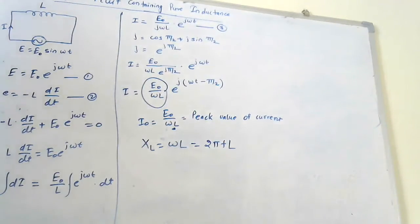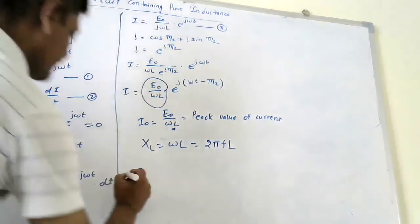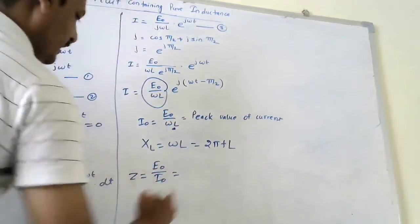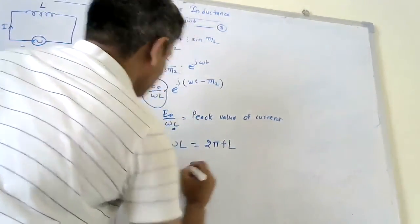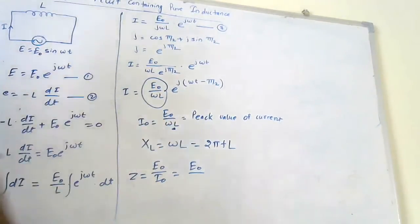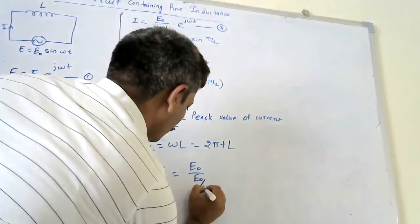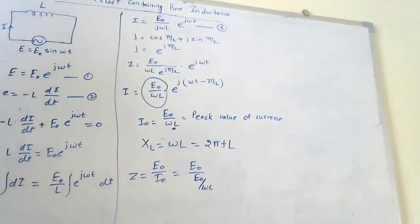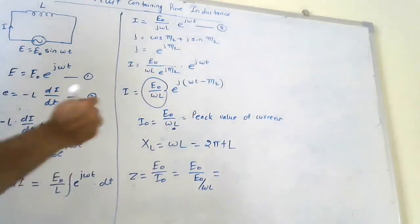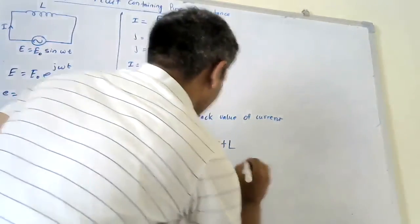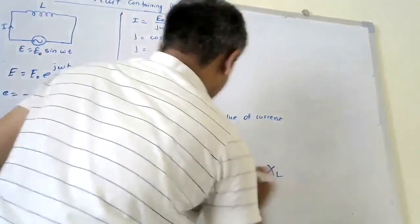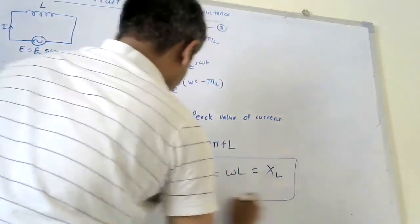Now after that, we have to find out the impedance. Impedance is denoted by Z, where Z equals E0 upon I0. Since I0 is nothing but E0 upon ωL, we get Z equals E0 upon (E0/ωL), which gives Z equals ωL, which is nothing but XL. This is the impedance, equal to the inductive reactance.